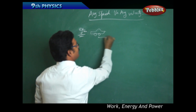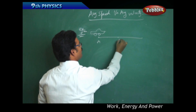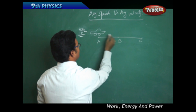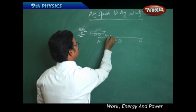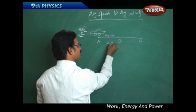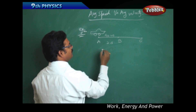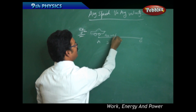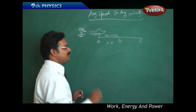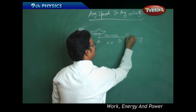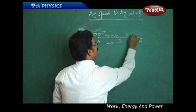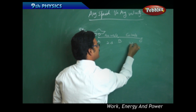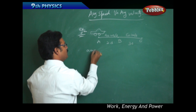Now the same car moves from point A to B and B to C. From A to B, the car has traveled at 40 meters per second in 2 seconds. From B to C, it travels at 60 meters per second and the time taken is 3 seconds. What is the average speed of the car?